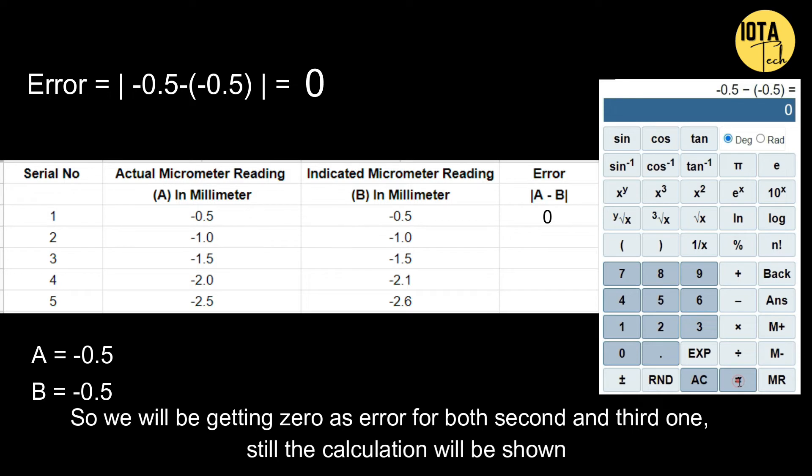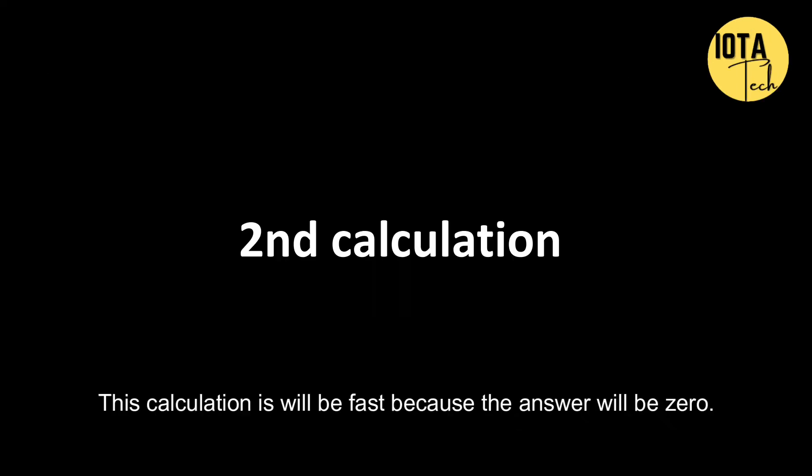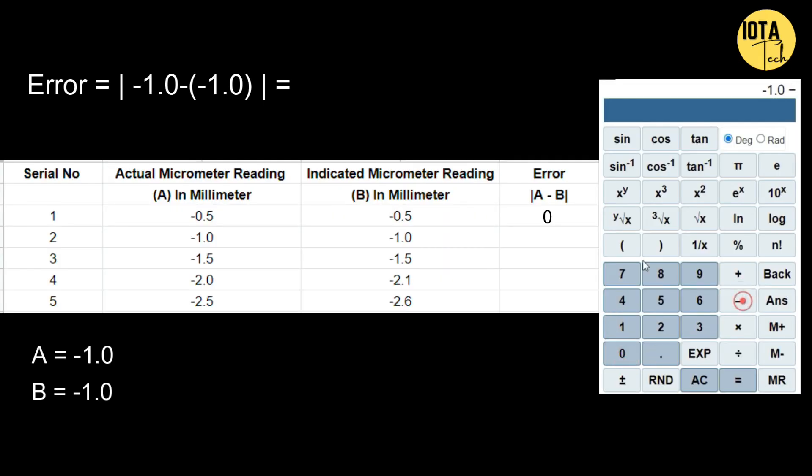Still, the calculation will be shown. This calculation will be fast because the answer will be zero. The error found is zero.